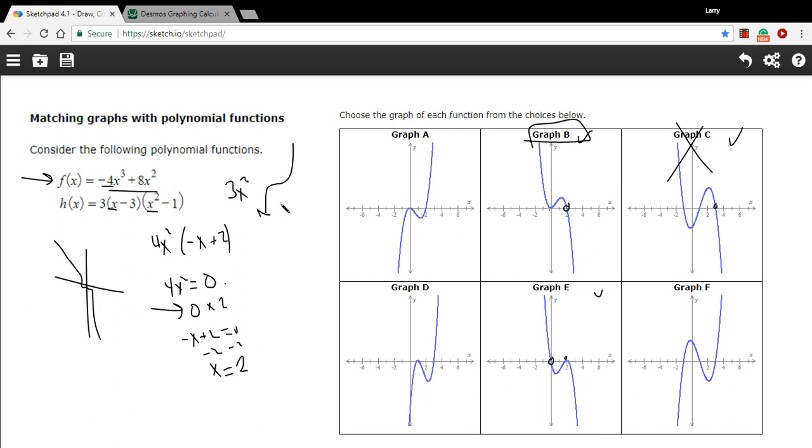So our end behavior is going to look like this. It's going to rise as we go to the right, it's going to fall going to the left. So that would either be A or D or F. Okay, so we can rule the rest of these out.